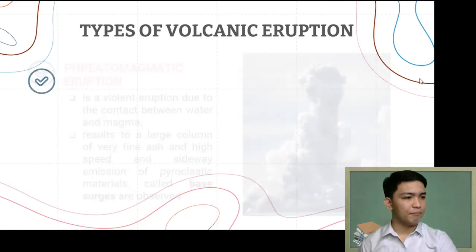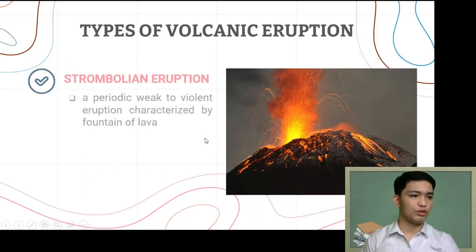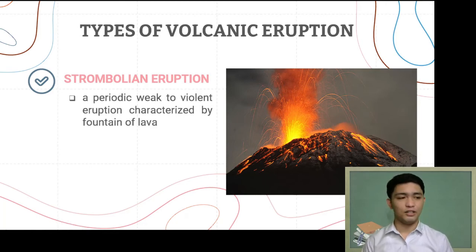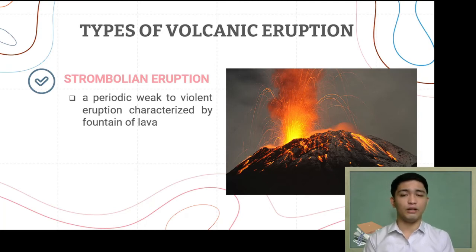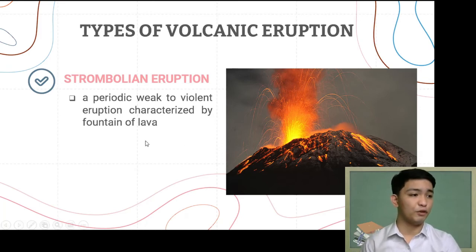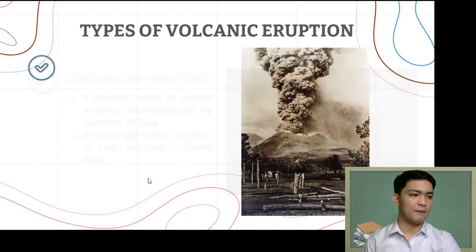The third type is strombolian eruption — a periodic, weak to violent eruption characterized by fountains of lava. This is a less violent type of eruption, usually accompanied by lava flow. An example of this would be the eruption of Irazú Volcano in Costa Rica.